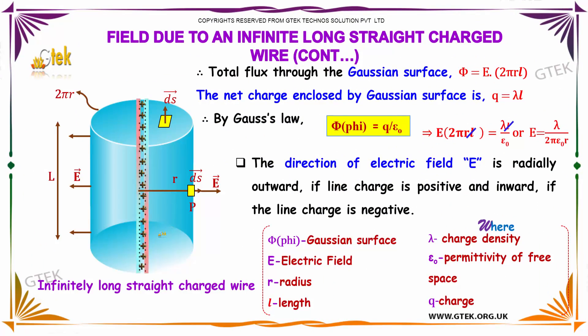Therefore, the total flux through the Gaussian surface is Φ = E × 2πrL. The net charge enclosed by the Gaussian surface is q = λL. Therefore by Gauss's law, we can substitute and solve.